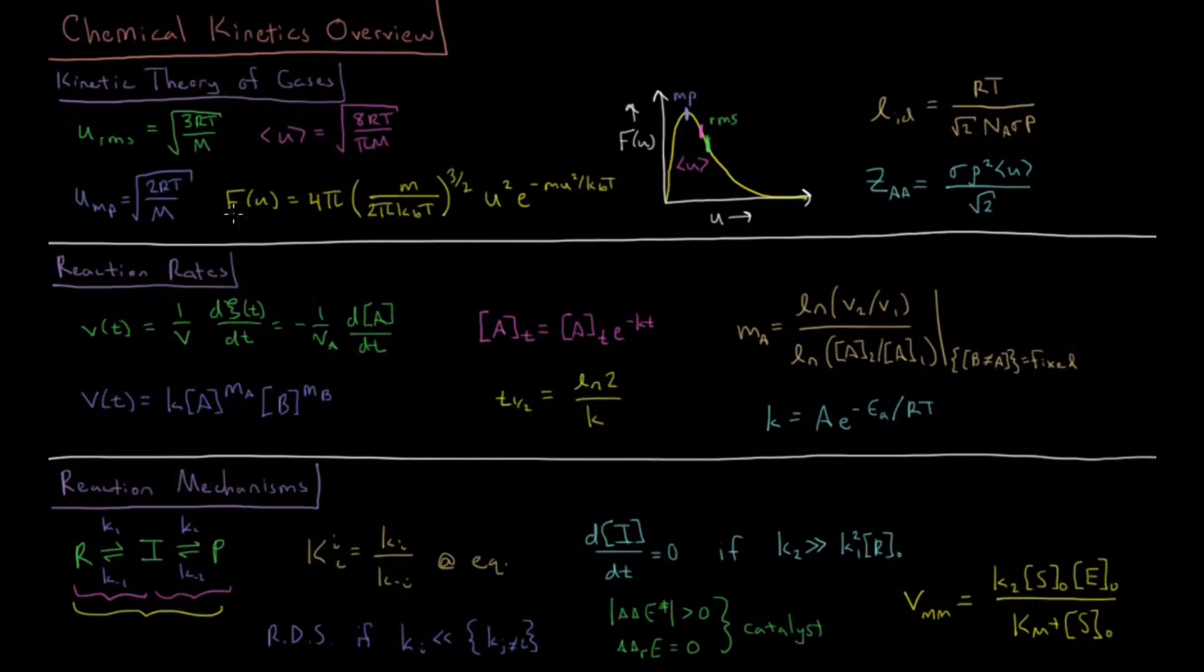The actual distribution of molecular speeds in a sample of gas is given by the Maxwell-Boltzmann distribution which I've graphed over here which is 4 pi times mass over 2 pi Boltzmann constant times temperature.